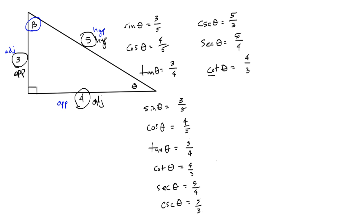So now let's take a look at angle beta instead. So the sine of angle beta is the opposite side, which is 4, over the hypotenuse, which is 5. The cosine of angle beta is going to be the length of the adjacent side, which is 3 over the hypotenuse, which is 5.